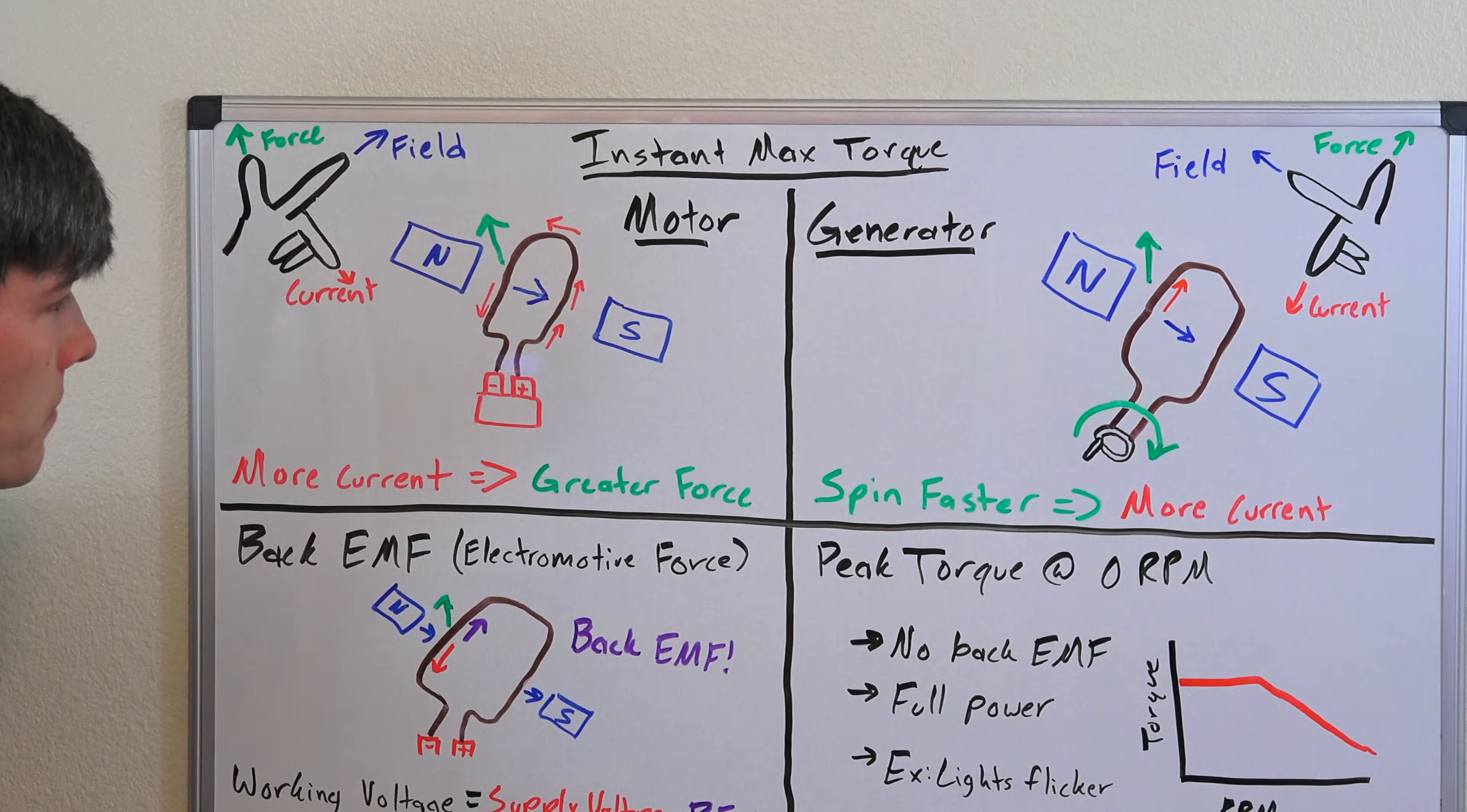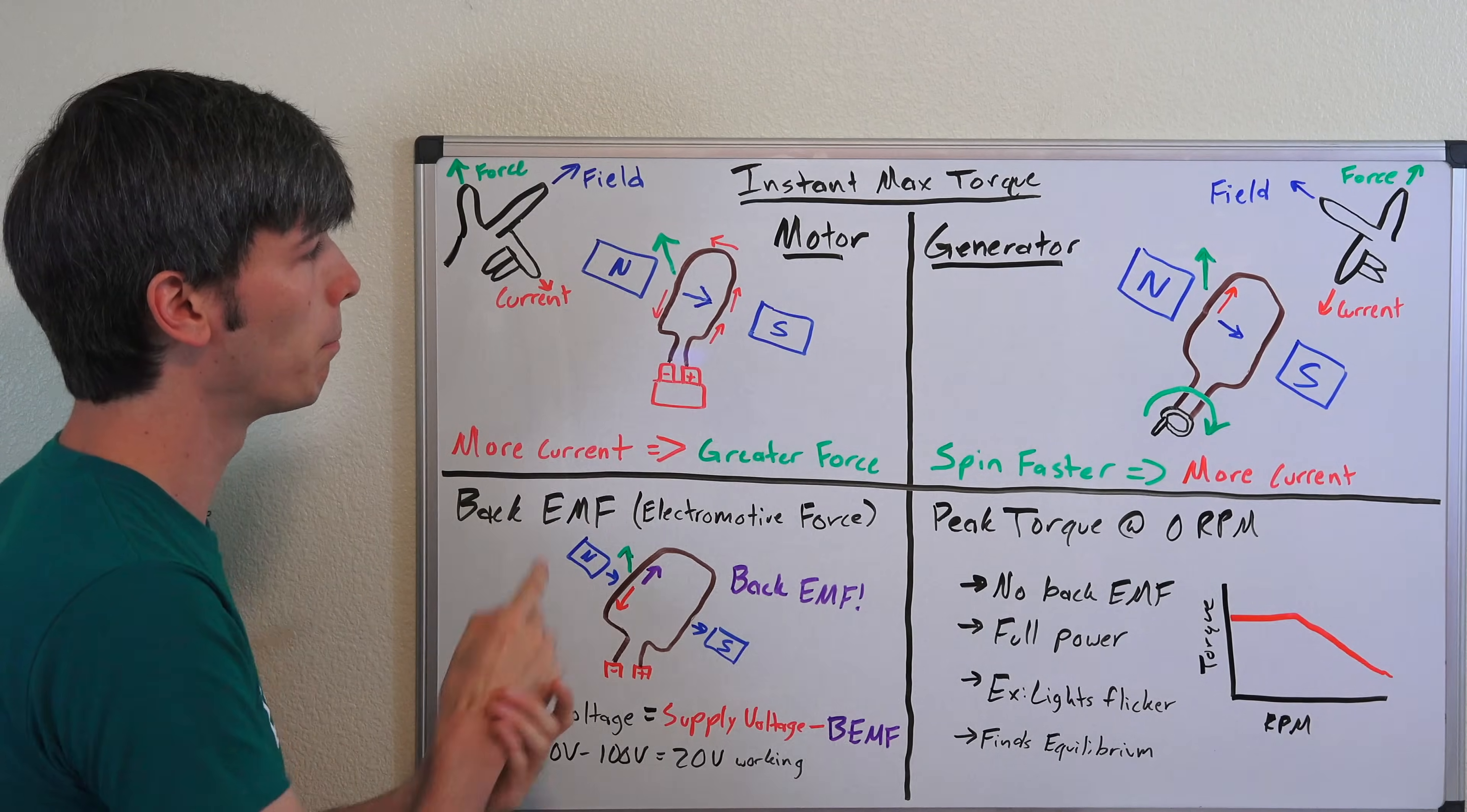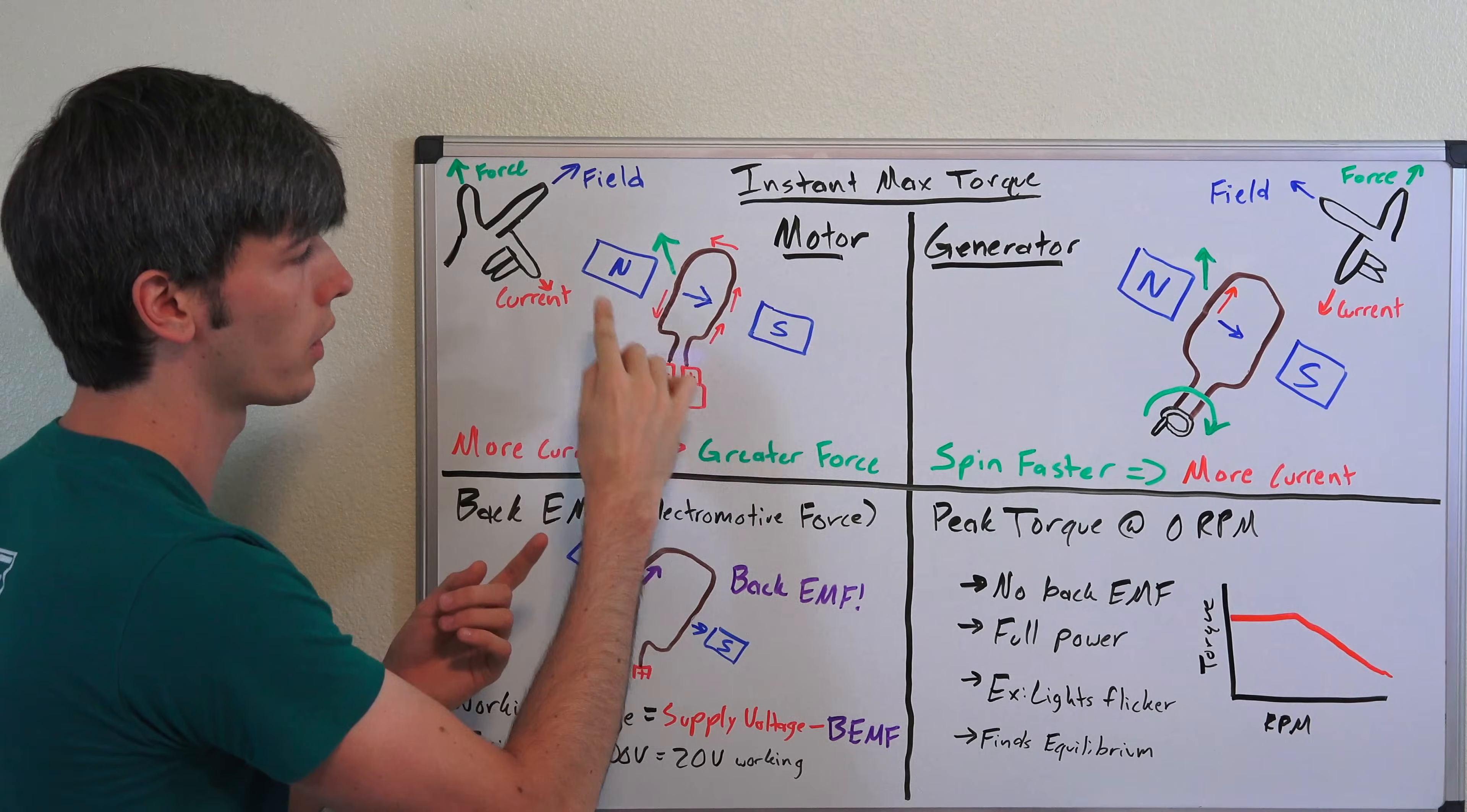When you supply that current you're going to start spinning this motor, but because you're spinning the motor you're going to have a back voltage in the opposite direction. So it goes back and forth. You supply the current, you spin that motor up, but once you have a spinning motor the rotation of that motor creates this back EMF.